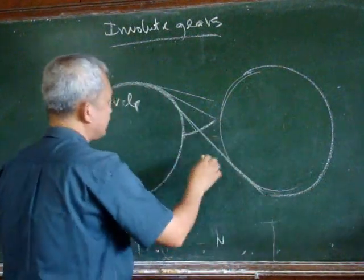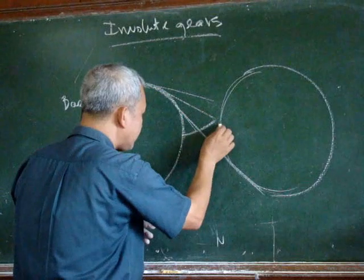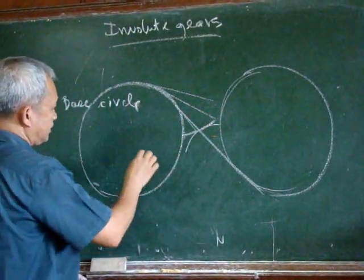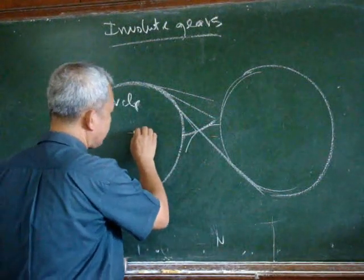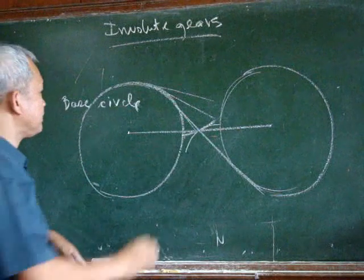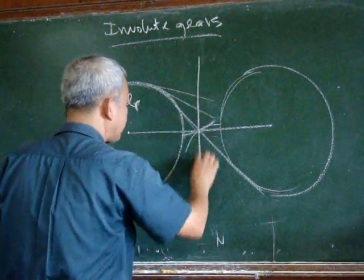So we can just draw that line and have that particular shape of the gear teeth. We can now draw this line perpendicular between the line of centers and draw this perpendicular line.